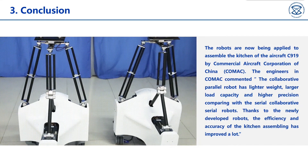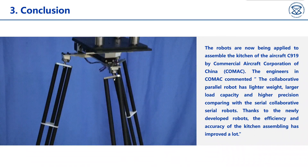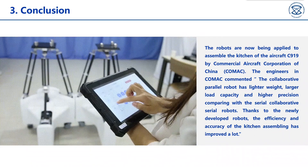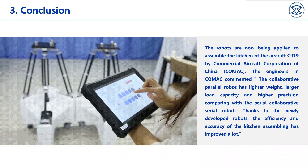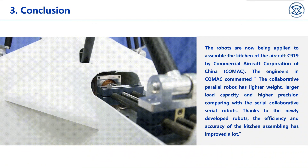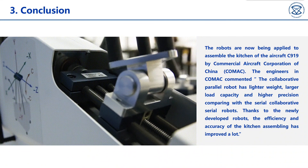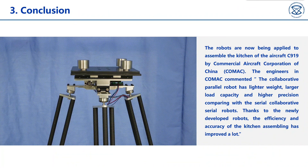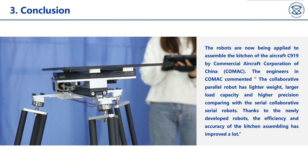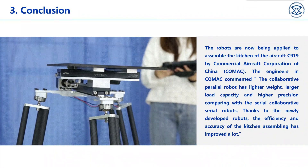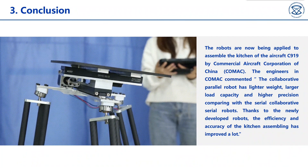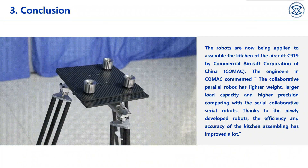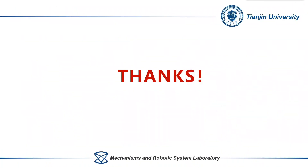The designed robots have been successfully applied in the kitchen assembly of China's commercial aircraft C-919. Comac engineers commented: compared with serial robots, collaborative parallel robots are lighter, can carry heavier loads, and more precise. The efficiency and accuracy of kitchen assembly has improved a lot. That's all. Thanks for listening.